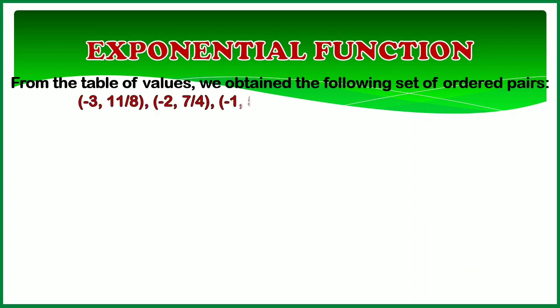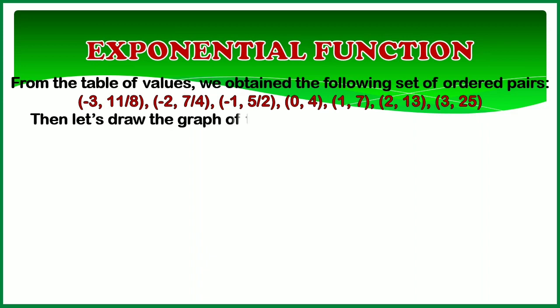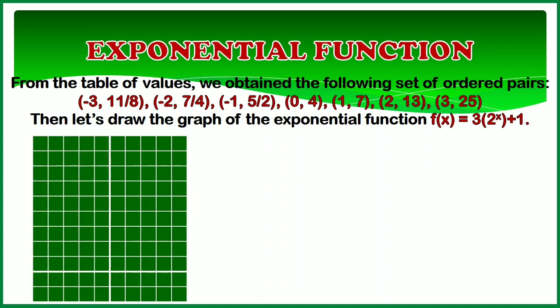From the table of values, we obtained the following set of ordered pairs: negative 3 and 11 eighths; negative 2 and 7 fourths; negative 1 and 5 halves; 0 and 4; 1 and 7; 2 and 13; 3 and 25. Then let's draw the graph of the exponential function f of x equals 3 times 2 to the x plus 1.